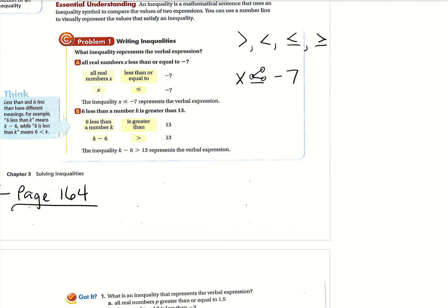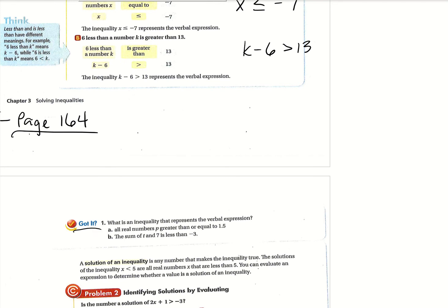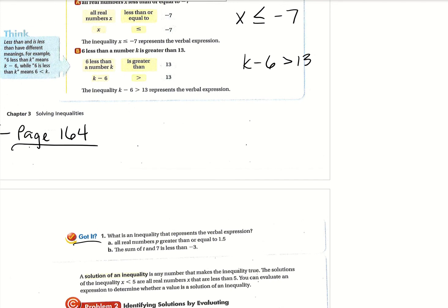Just in case you needed that refresher, there it is. And then the second one, letter B: 6 less than a number k is greater than 13. So that's going to be k minus 6, and then greater than 13. Really simple to start off. I won't have us do the 'got it' problems because I think we understand the greater than and less than stuff.